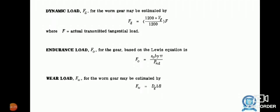Entrance load F_0 for the gear based on the Lewis equation is F_0 = S_0 B Y b / (P_N D). Gear load F_W for the worm gear may be estimated by F_W = D_G × B × β.